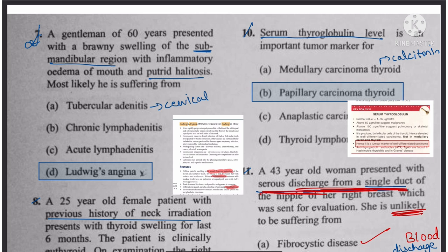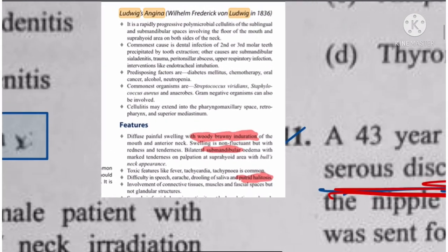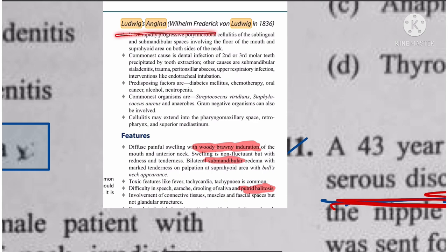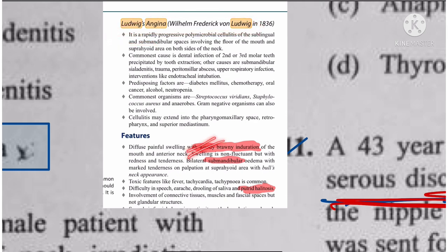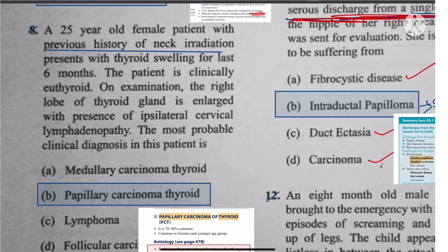Question 7: A 60-year-old gentleman presents with brawny swelling in the submandibular region and putrid halitosis. The features — woody brawny induration in the submandibular region and putrid halitosis — indicate Ludwig's angina. The answer is Ludwig's angina.